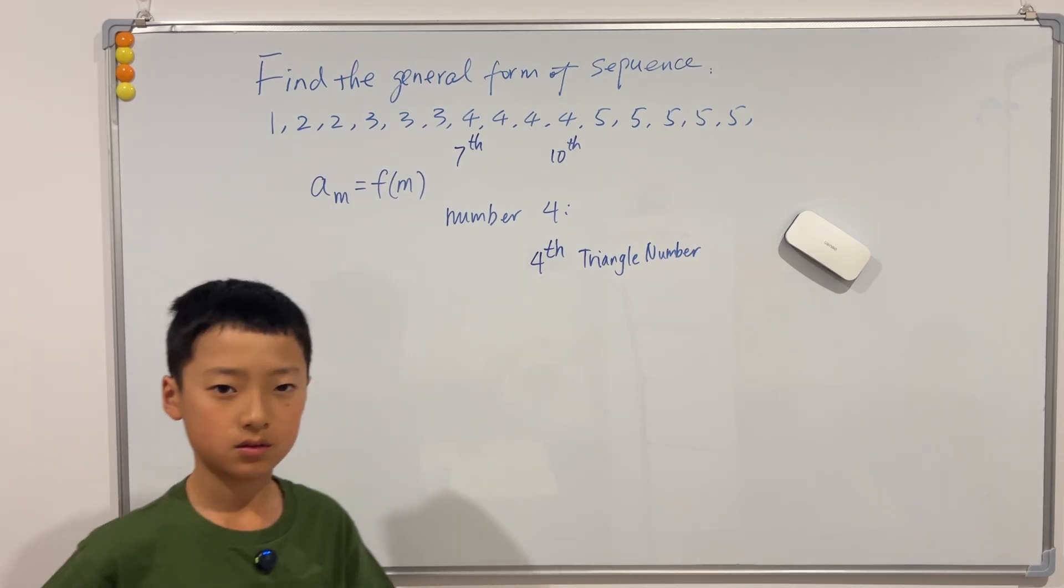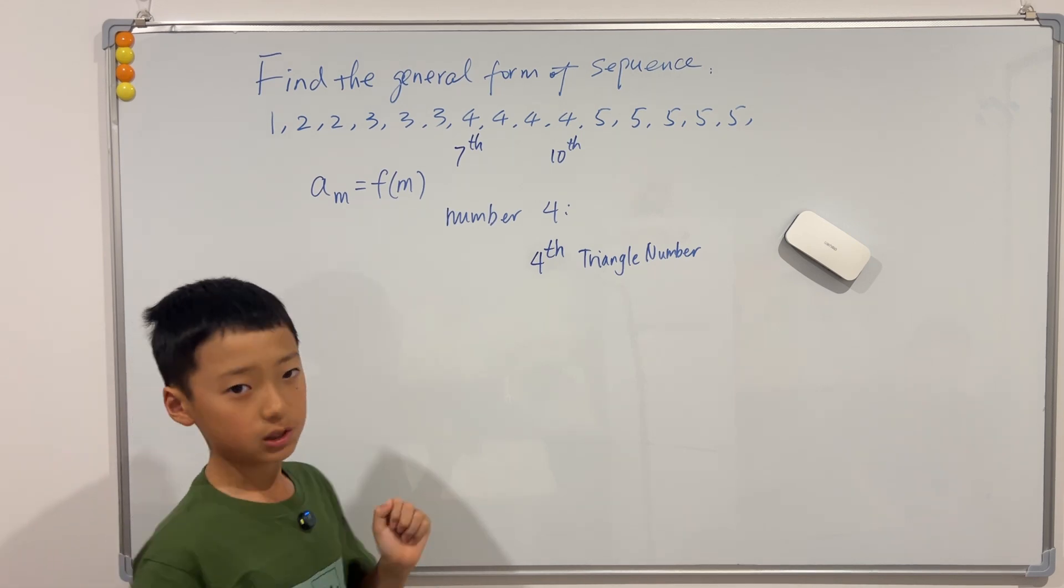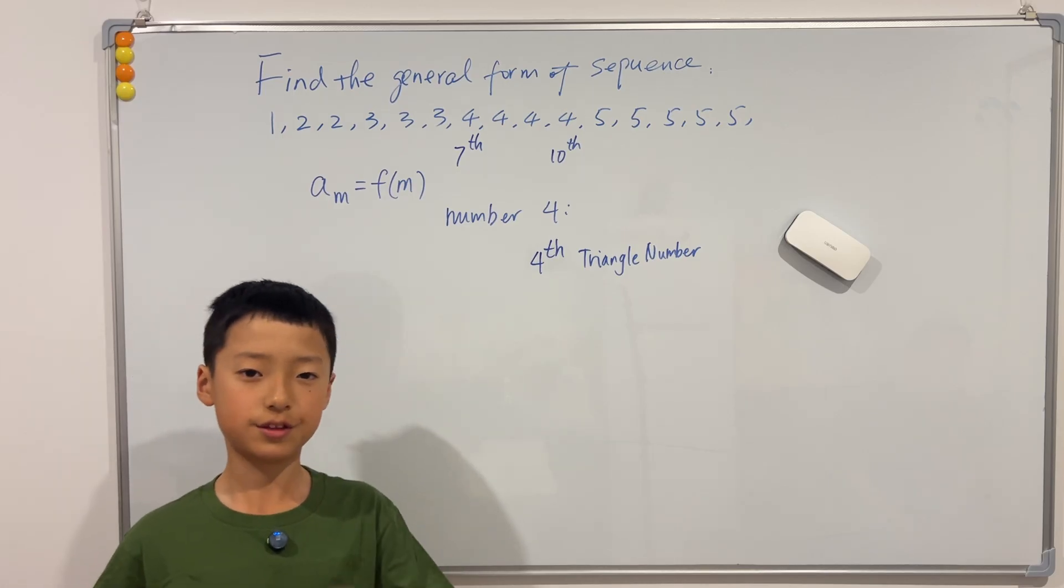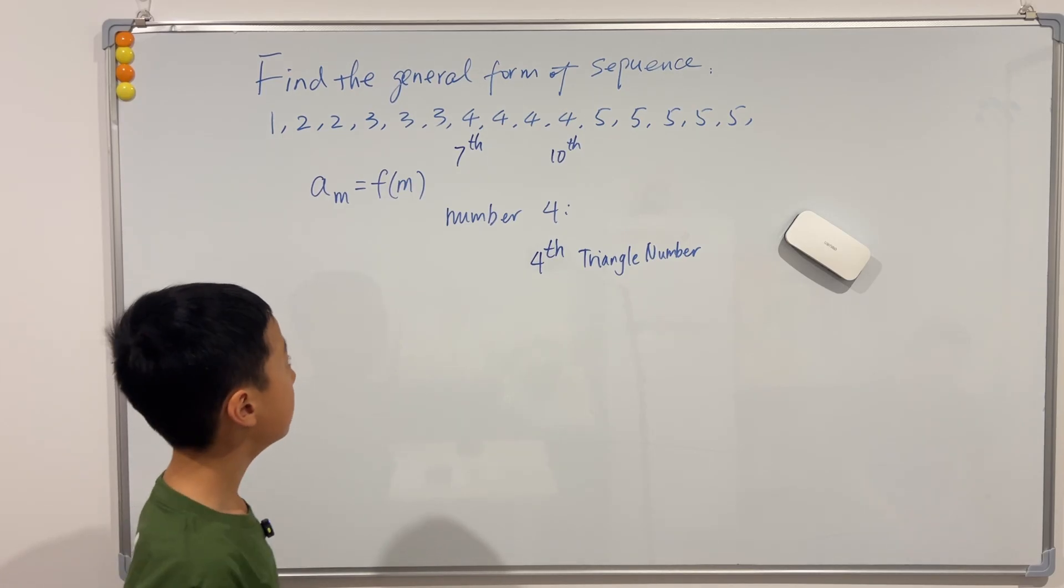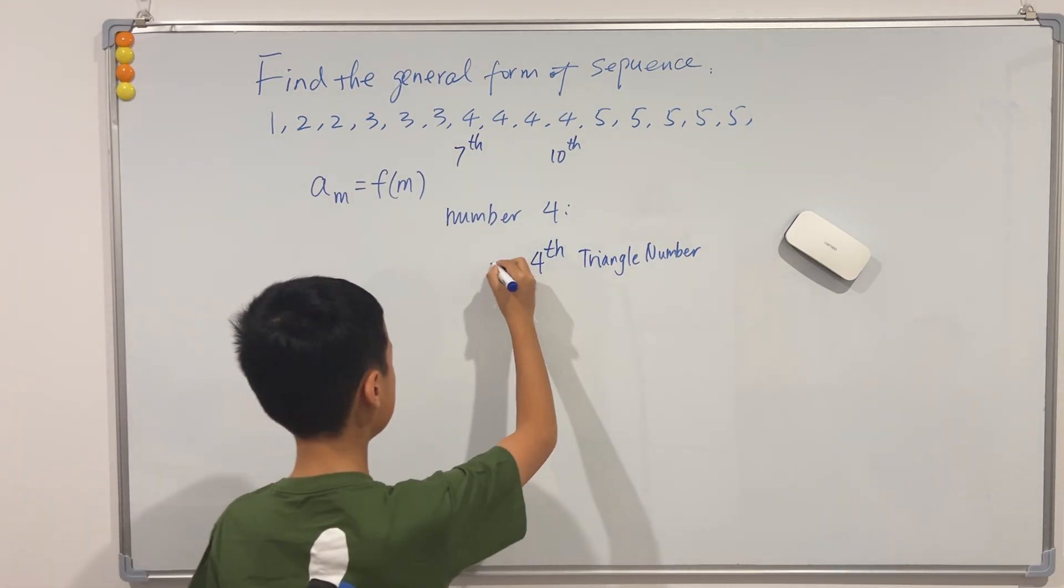But it starts at seven. Now what's seven? Well, the location before seven is six, and six is the third triangular number. So seven is just the third triangle number plus one.